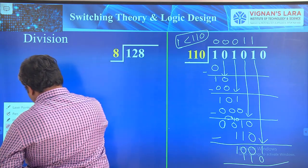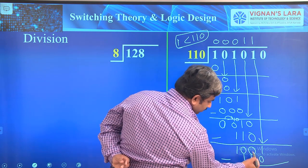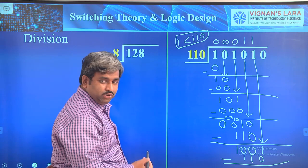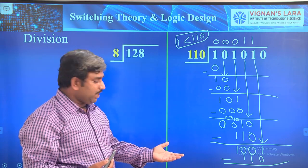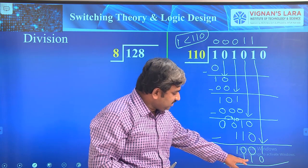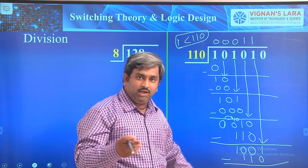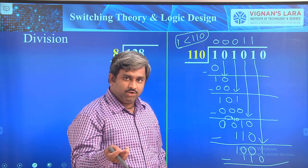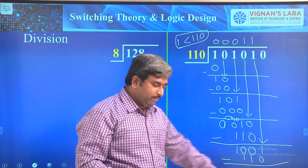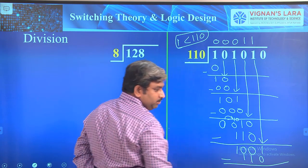Subtracting 1100 minus 110: 1 minus 0 is 1; 0 minus 1 — we cannot subtract, so we take a borrow. Here, 100 in binary equals 4 and 11 in binary equals 3, so 4 minus 3 equals 1. We can write 1 directly, but let's follow the borrowing process.